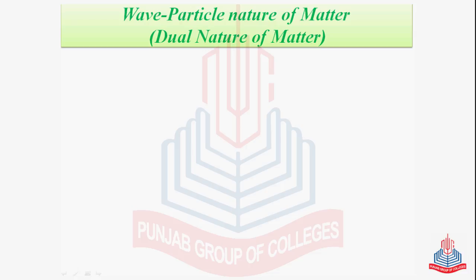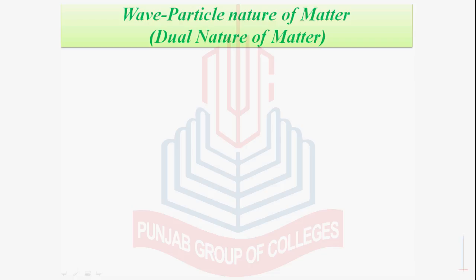This idea was extended by Louis de Broglie in the year 1924. De Broglie used pre-existing phenomena to give a relationship — a mathematical relationship between the wavelength of the electron and its momentum. He proved that all particles having motion possess a dual character — electrons, protons, neutrons, atoms, molecules, etc. — they all should behave as a material particle as well as a wave. This is called wave-particle duality of matter.